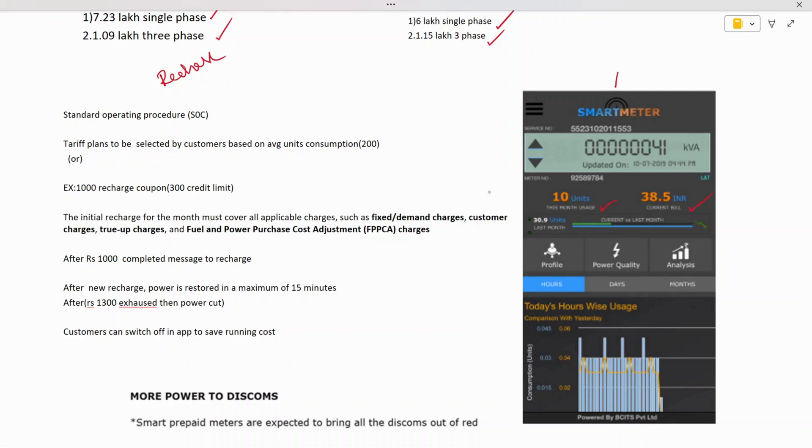The government has framed a standard operating procedure. The customer is given an option to select their tariff plan based on average consumption. If you don't know this, you can directly do a recharge. The SPDCL or EPDCL will provide a basic recharge coupon.